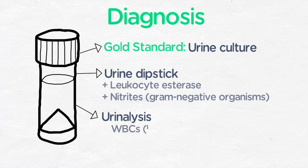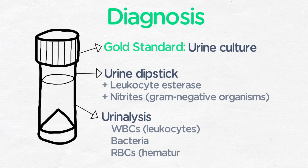On urinalysis with microscopy, white blood cells or leukocytes will be seen, as can bacteria and sometimes red blood cells if there is hematuria.